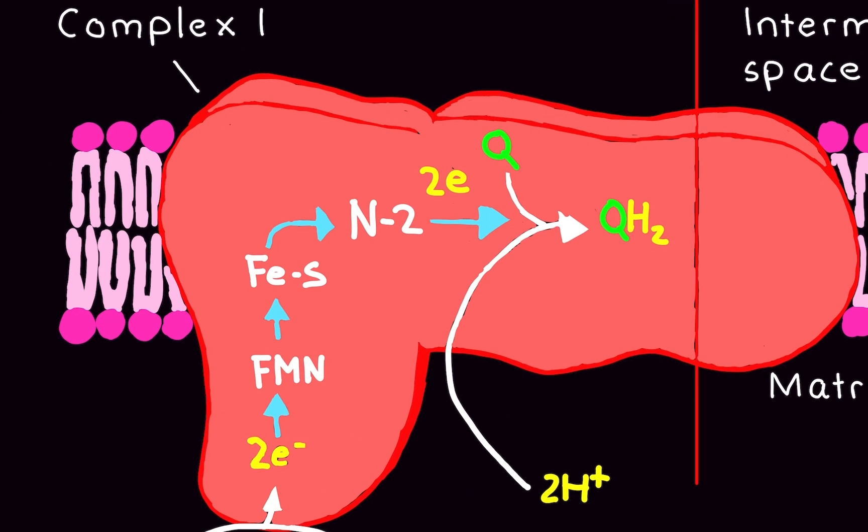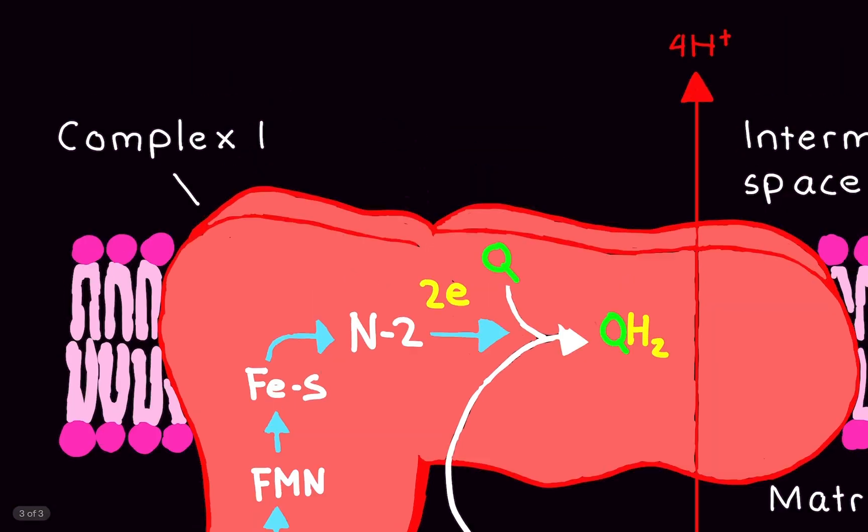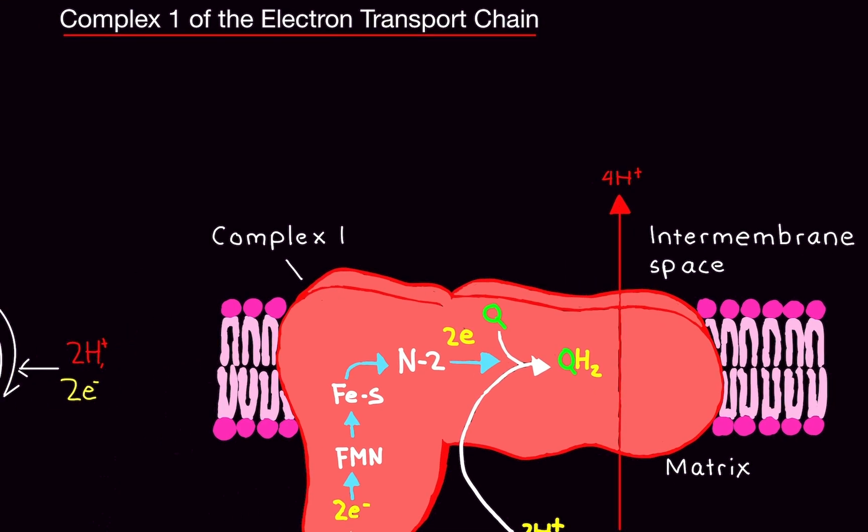So now we have FMNH2. And what's going to happen is it's going to transfer its electrons to these iron-sulfur clusters. Now, these iron-sulfur clusters are good at one thing. They are good at transferring electrons really fast. Now, these iron-sulfur clusters is literally what it sounds like. It's basically two iron molecules bonded to two sulfur molecules.